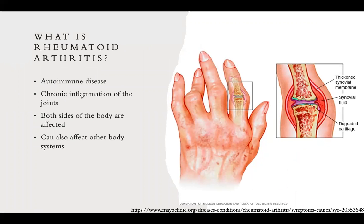Rheumatoid arthritis is an autoimmune disease where the immune system attacks the joints, causing chronic inflammation. It affects both sides of the body — so if you have it in your left wrist, you'll have it in your right wrist too, but not necessarily to the same severity. It can affect any joint, but is most commonly associated with the wrist, hands, knees, ankles, and feet.